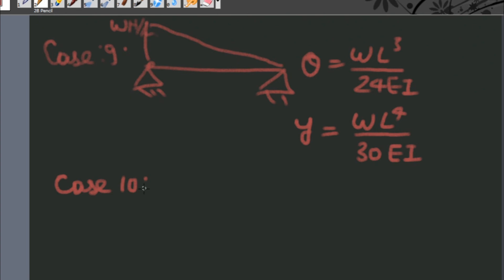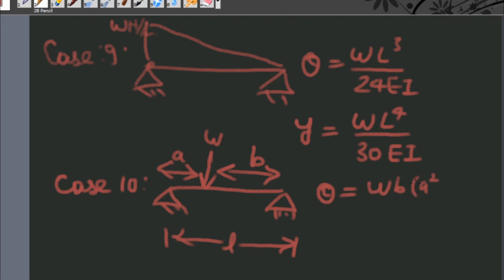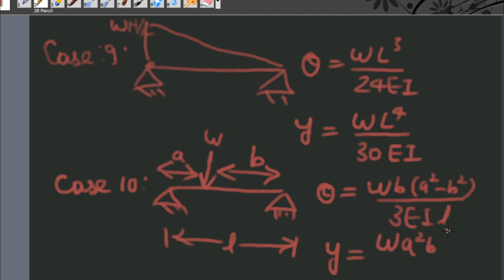Case number ten: when a simply supported beam of span L is subjected to a concentrated point load W at a distance A from the left-hand side and distance B from the right-hand side, then the angle of twist theta and deflection Y are given by expressions involving W, A, B, and EI.